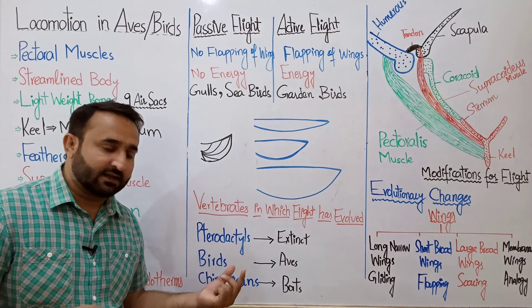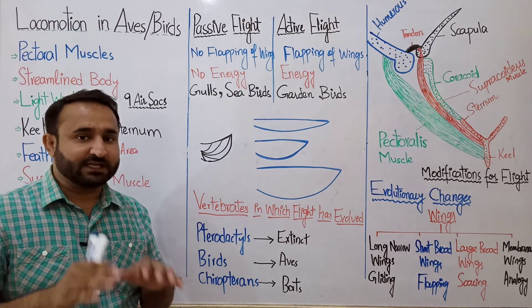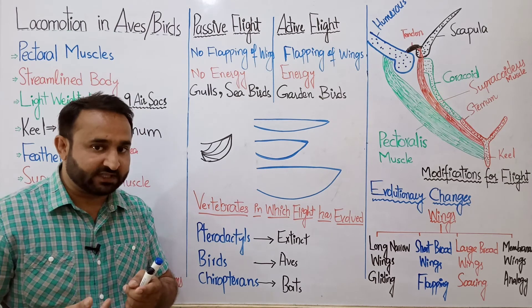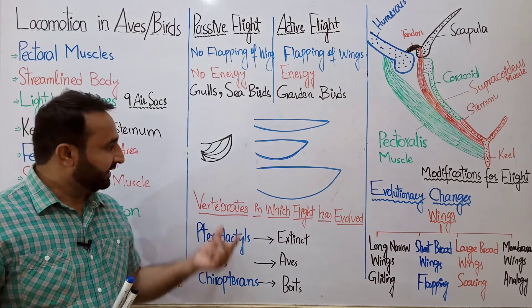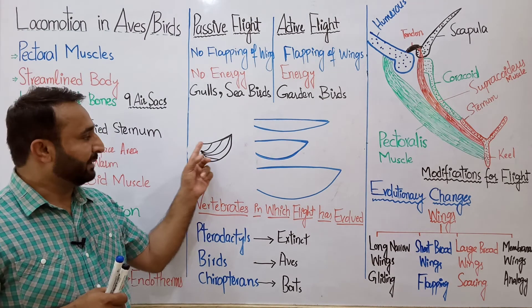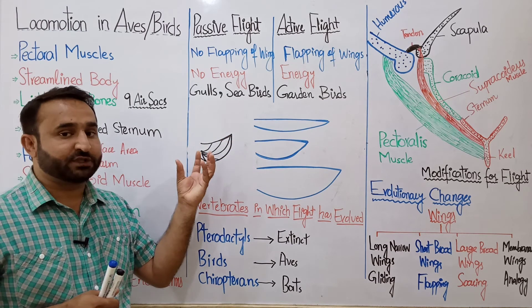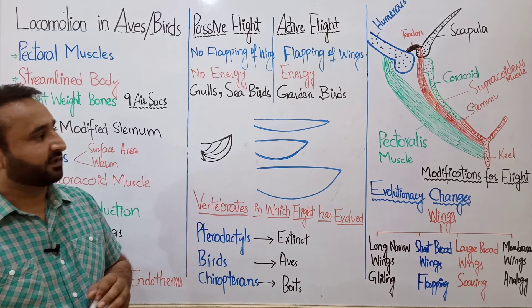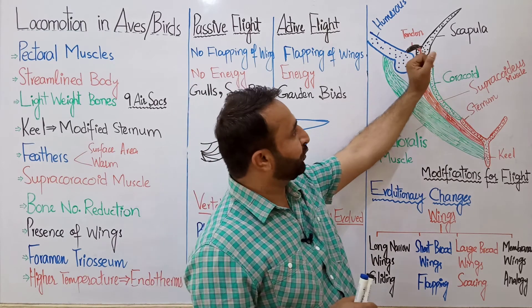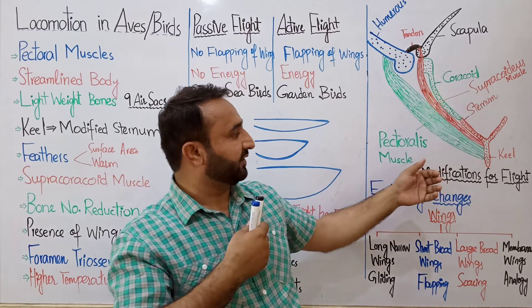Chiroptera ایک order ہے — یہ basically mammals کا ایک order ہے جس میں bats (چمگادڑ) موجود ہیں۔ ان کے پر پرندوں کی طرح نہیں ہوتے، feathers نہیں ہوتے — بس یہ analogous to wings of the birds ہیں، یعنی کام وہی کرتے ہیں لیکن internal structure مختلف ہے۔ ان میں five digits موجود ہیں اور digits کے درمیان web یا membrane موجود ہے جو انہیں flight فراہم کرتی ہے۔